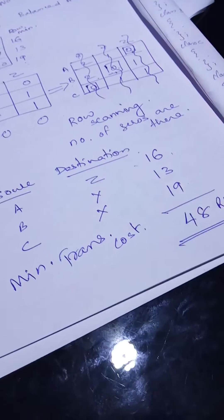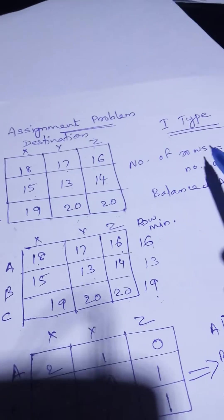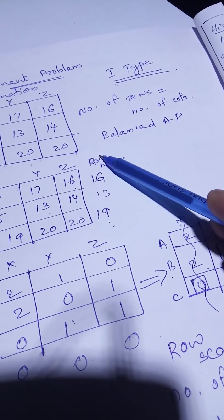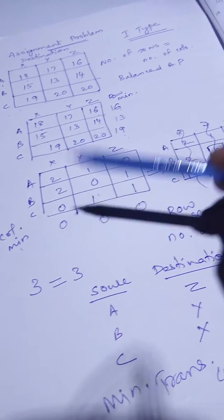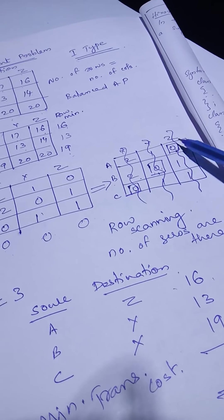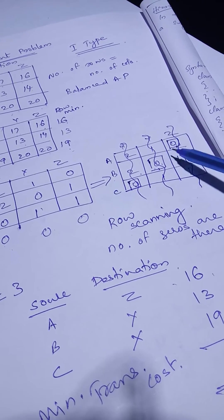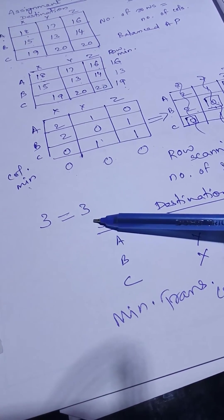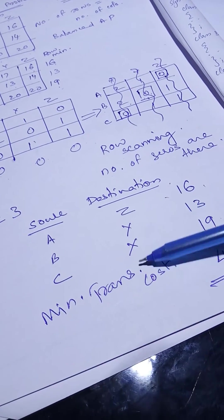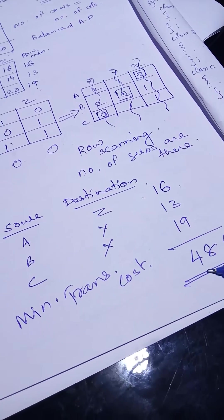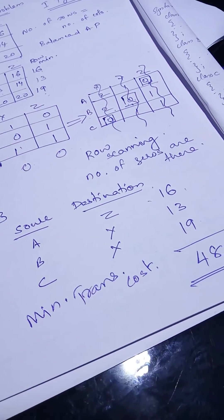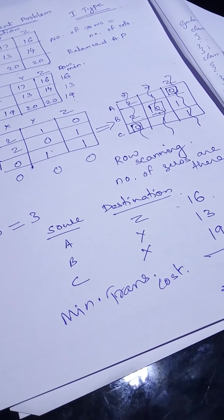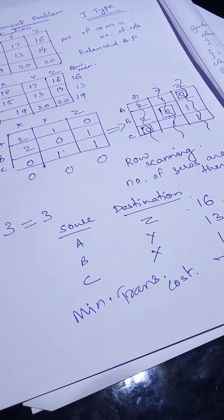This is how the Type 1 method is applied to the assignment problem. The steps are: find row minimum and subtract, find column minimum and subtract, perform row scanning to square single zeros and cut columns, verify that the number of squared zeros equals the number of rows, then map sources to destinations using original values to get the minimum transportation cost. In the next video, I will work through another example. Thank you, dear students.